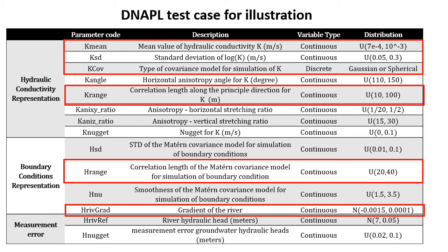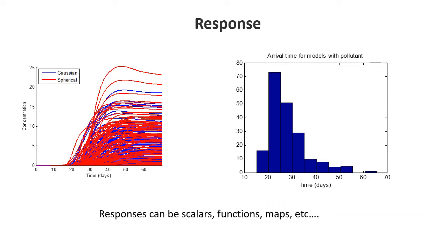In this case, we have many uncertainties. There are two basic types: one related to hydraulic conductivity and the other to boundary conditions. Here we focus on four to six parameters: mean conductivity, variance of conductivity, parameters related to spatial correlation of conductivity, and boundary condition parameters such as gradients. We can do Monte Carlo, generate many realizations, and calculate the arrival time of the pollutant — that is both the Monte Carlo approach and global sensitivity analysis. We can also apply local sensitivity analysis methods.